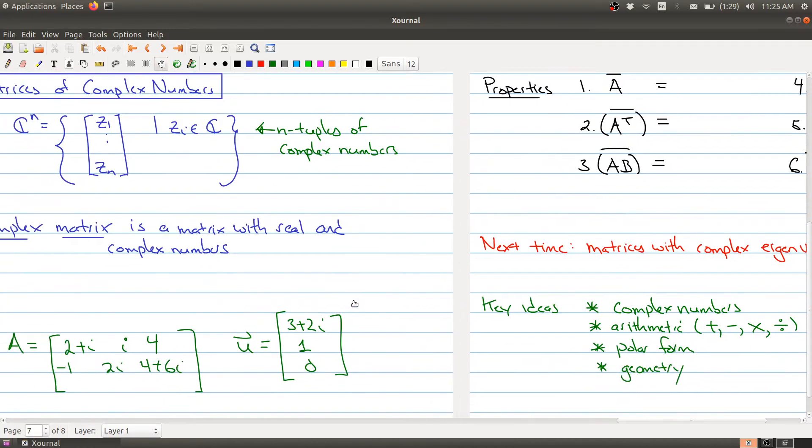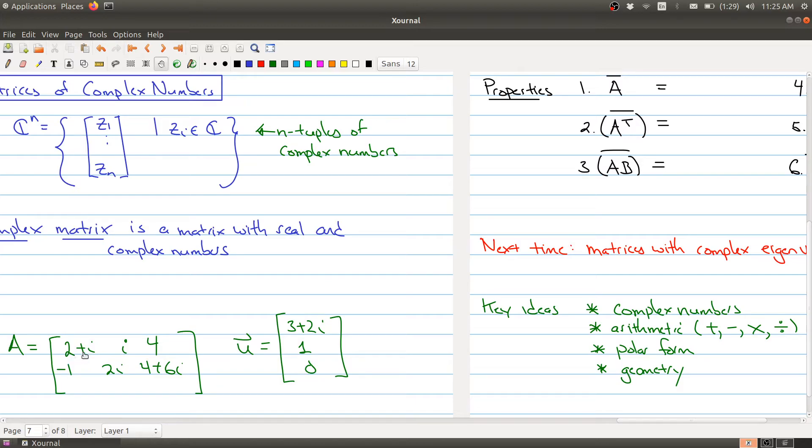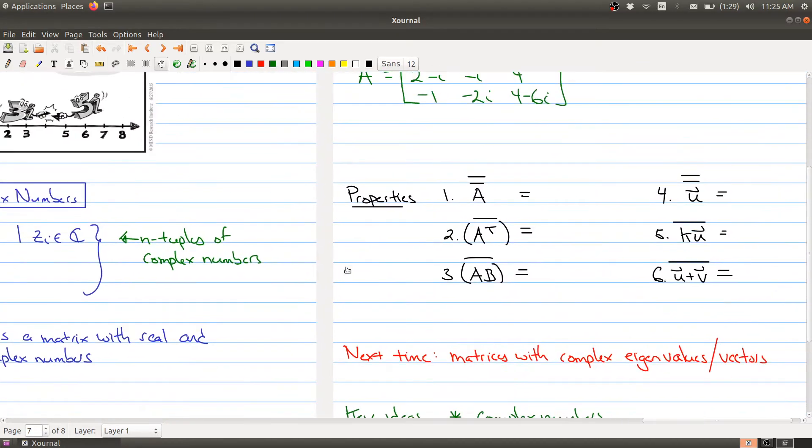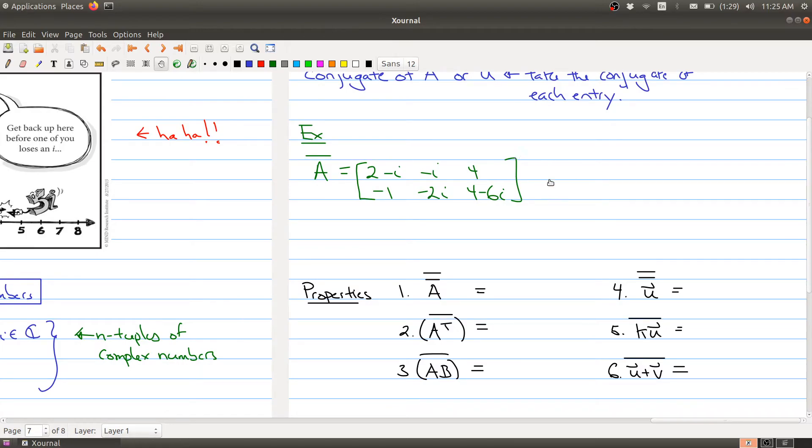So this becomes 2 minus i, that becomes minus i, 4, and negative 1. They don't change because they're real numbers. This becomes negative 2i and 4 minus 6i. And you can do it for our vector u. So let me do it for my vector u as well. So I would get the vector 3 minus 2i and 1 and 0.